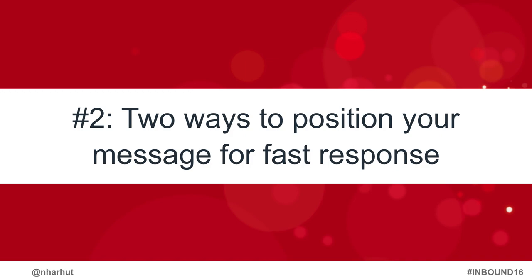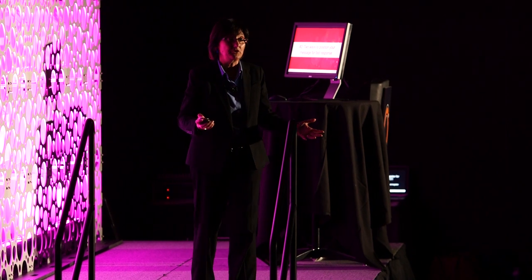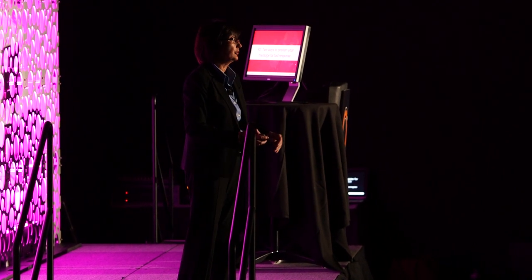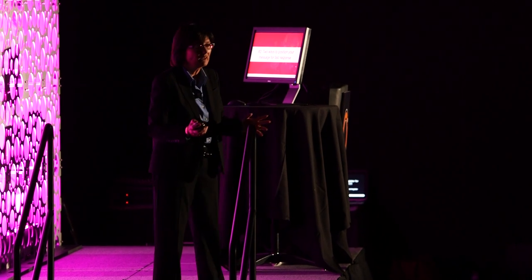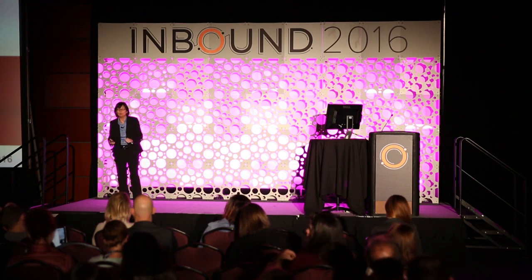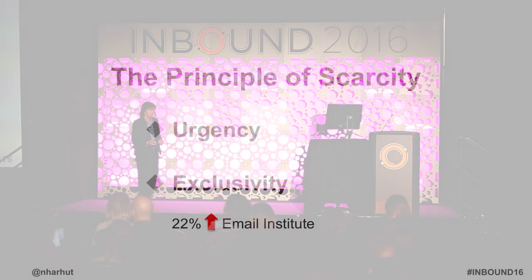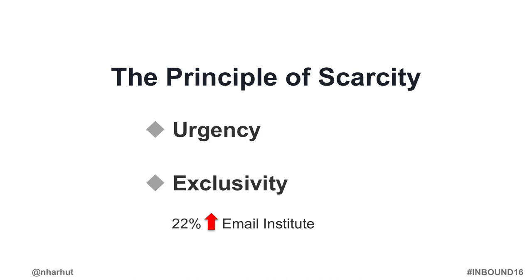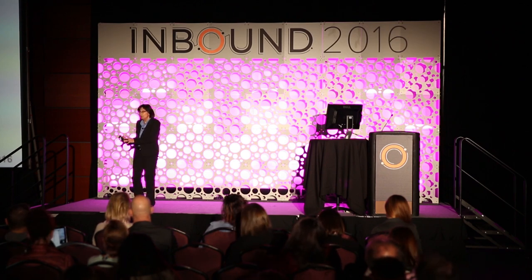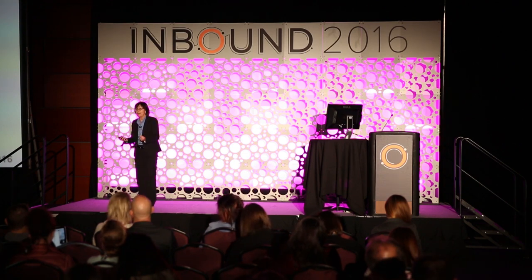Our second human behavior hack: two ways to position your message for fast response. We want response, and we want it fast, because if that email drops to the bottom of the list and disappears, there's a very good likelihood people aren't going to return to it. Both ways revolve around the principle of scarcity. If something is readily available, we may or may not be interested. But if someone knows it's only available for a certain amount of time or only to a certain group of people, that changes everything — suddenly we want it badly. Those are the two halves of scarcity: urgency and exclusivity.